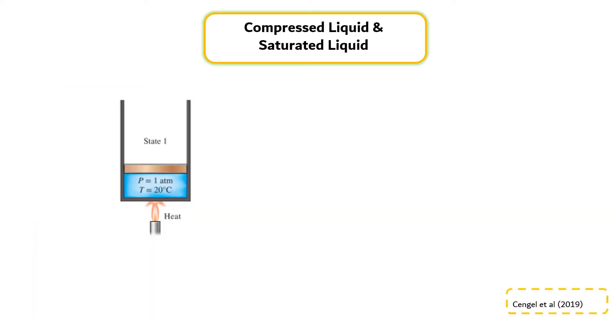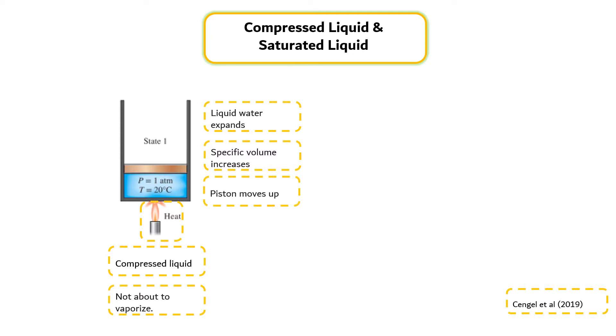Compressed liquid and saturated liquid. Let's consider a piston-cylinder device containing liquid water at 20 degrees C and 1 atmospheric pressure as shown in the left figure. Under these conditions, water exists in the liquid phase and it is called a compressed liquid or subcooled liquid, which means that it is not about to vaporize. Heat is now transferred to the water until the temperature rises. As the temperature rises, the liquid water expands slightly and so its specific volume increases. To accommodate this expansion, the piston moves up slightly.